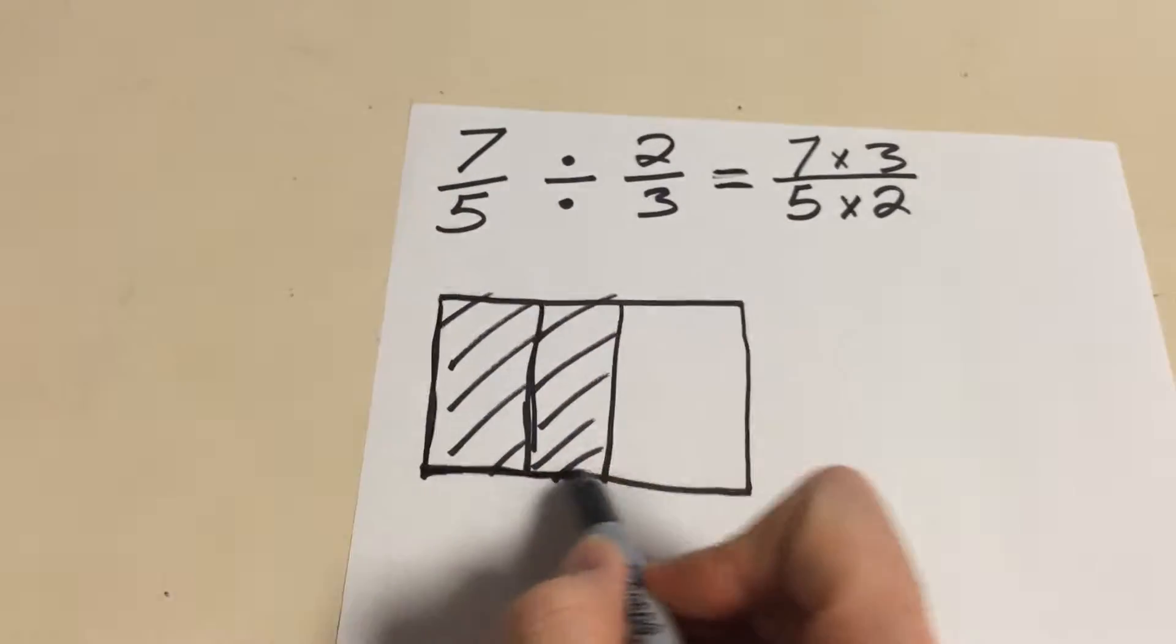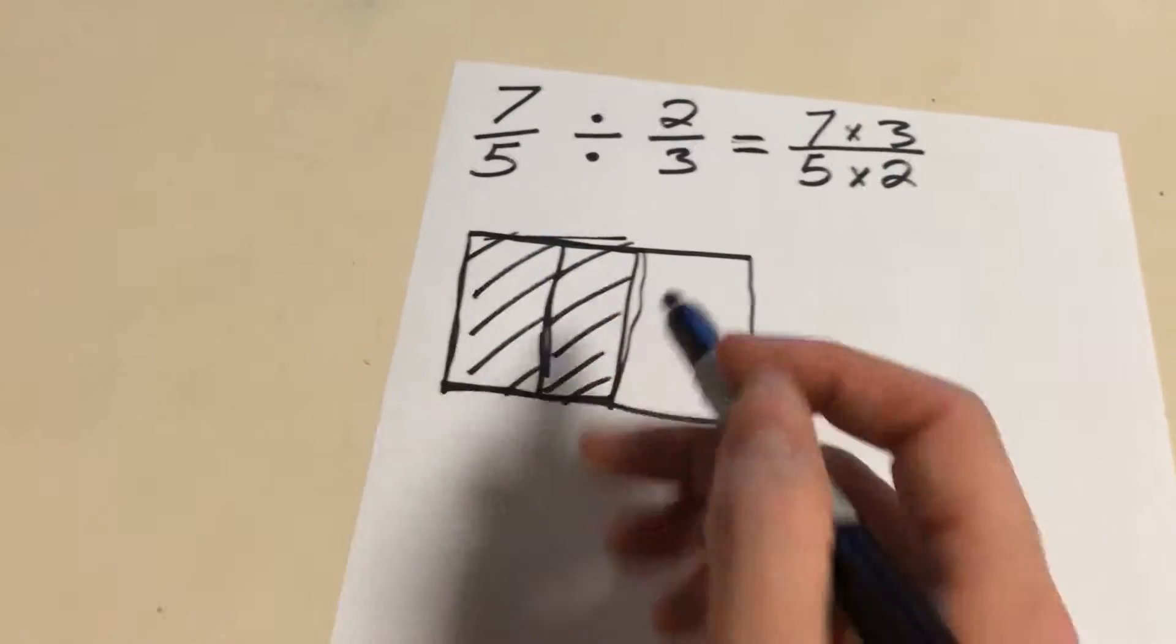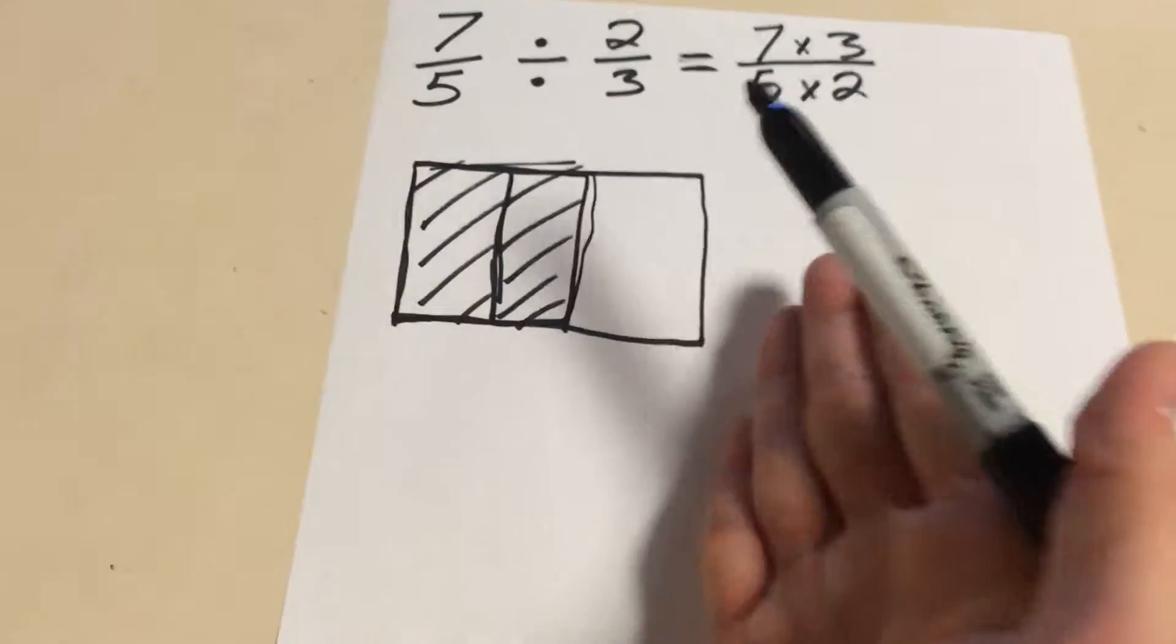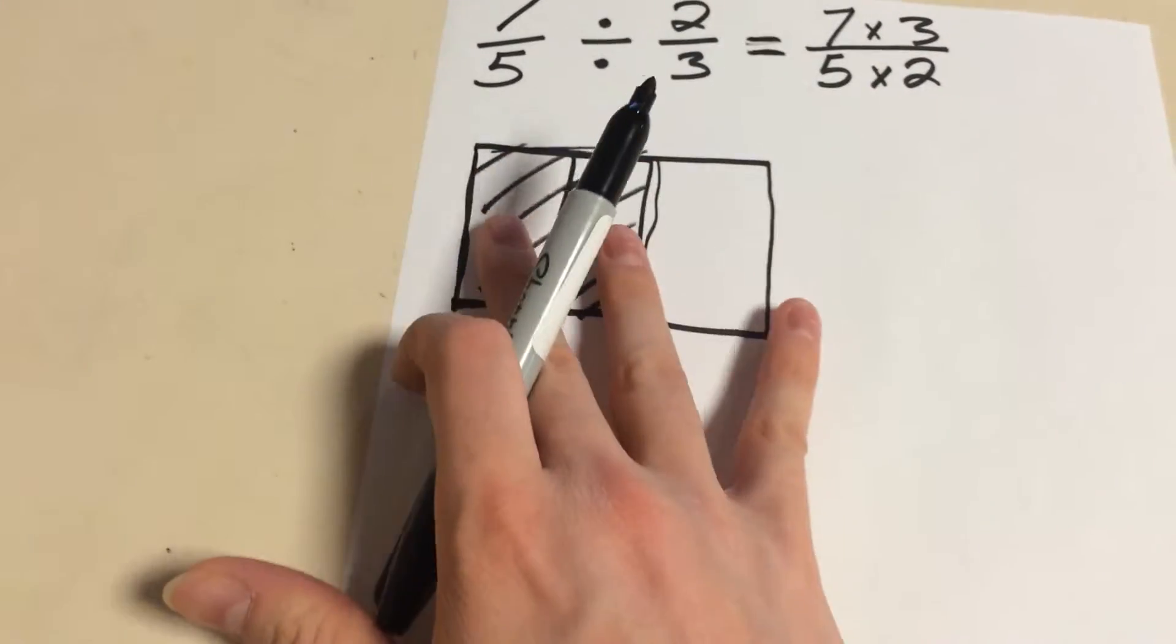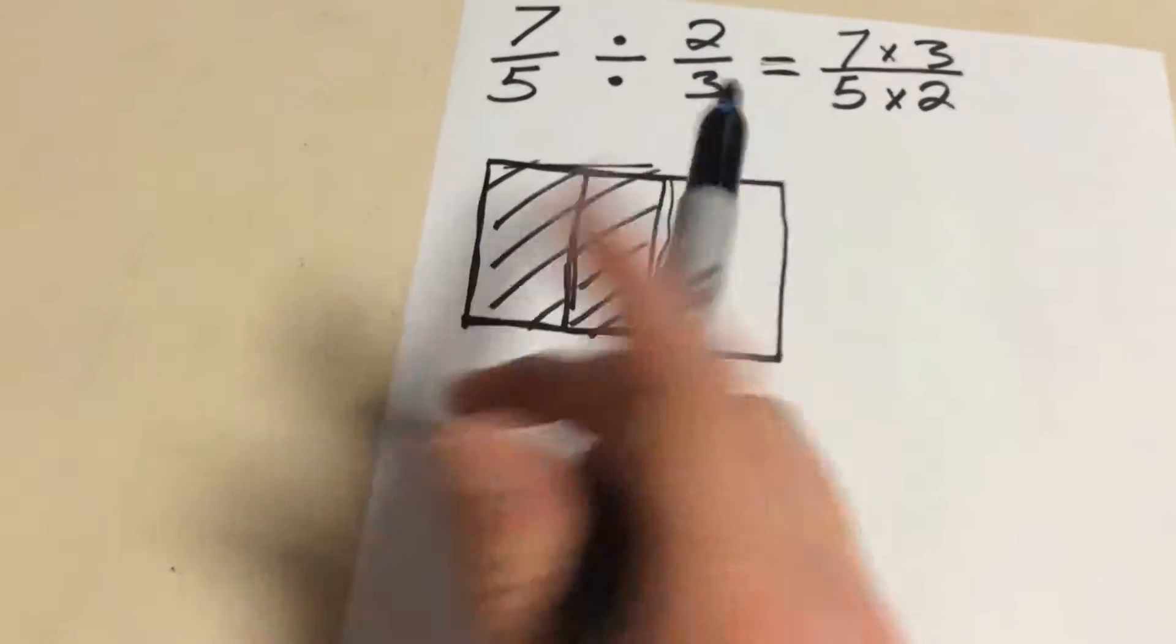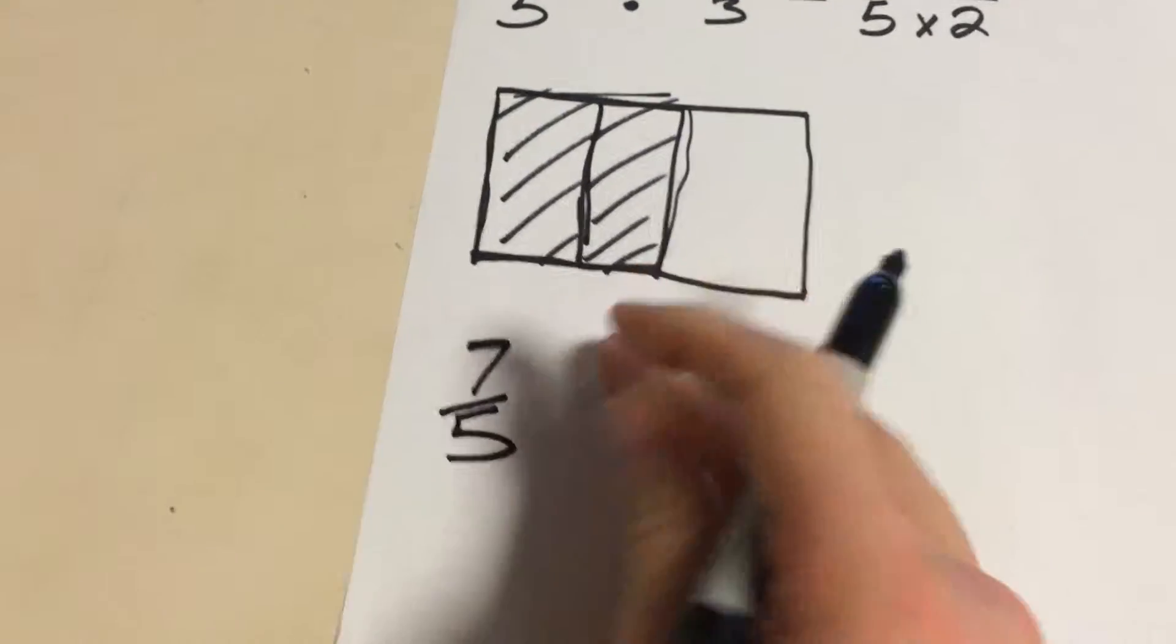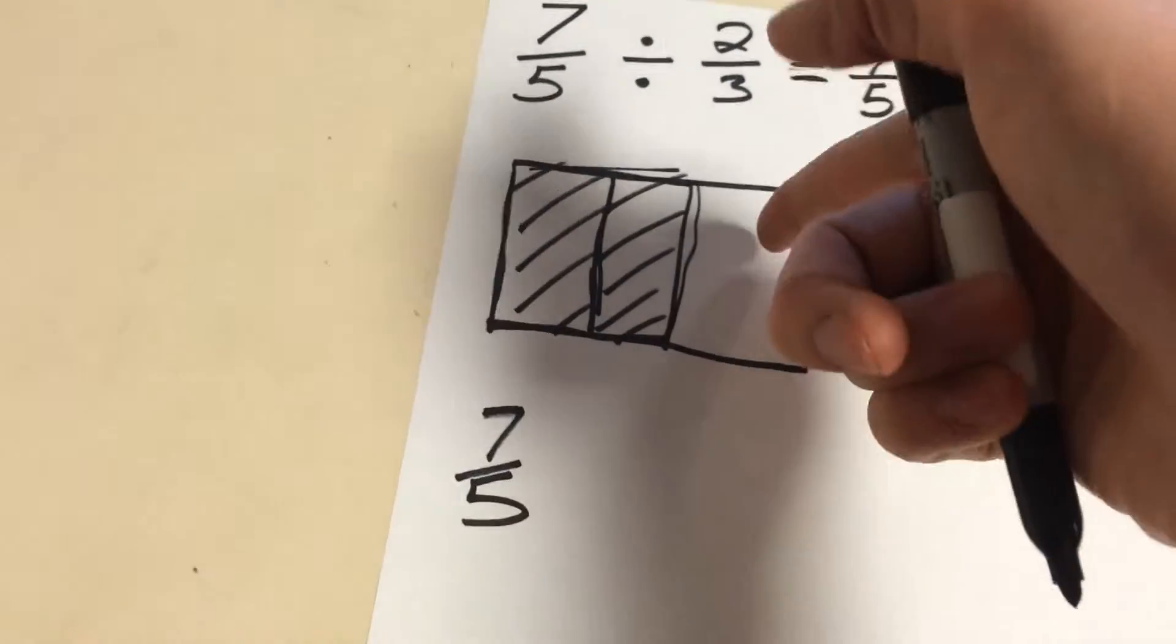We're going to pull our focus to these 2 thirds. Within these 2 thirds, 7 fifths is showing up. To find out how much goes within this entire whole, we're going to break that down even more. So we have our 2 thirds here, and within those 2 thirds, we have 7 fifths. Now to find the whole, how much goes into a whole,